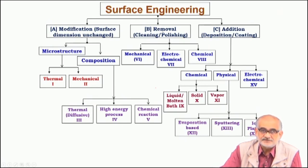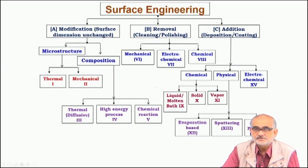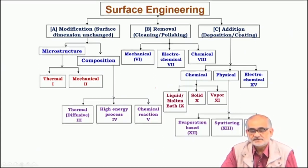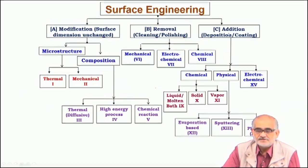The next possibility is where we actually remove some part of the surface — typically in an approach to clean or polish — and in the process we bring in certain changes in the surface chemistry and microstructure. We can also do another possibility, which is very widely practiced: deposition or coating, where we actually add on to the existing dimension of the surface. In approach A we do not change the macroscopic dimension; in B the thickness reduces when we remove material from the surface; and in C when we add on, we certainly increase the thickness or certain dimension of the surface.